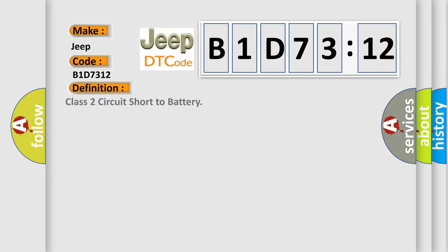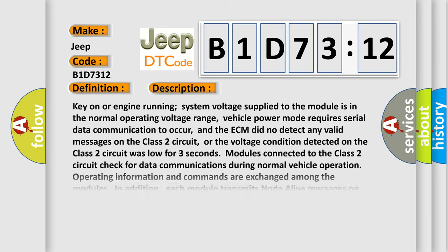The basic definition is Class 2 Circuit Short to Battery. And now this is a short description of this DTC code.